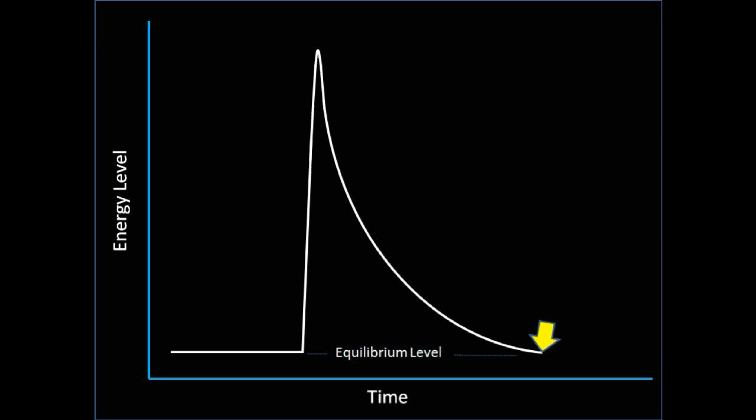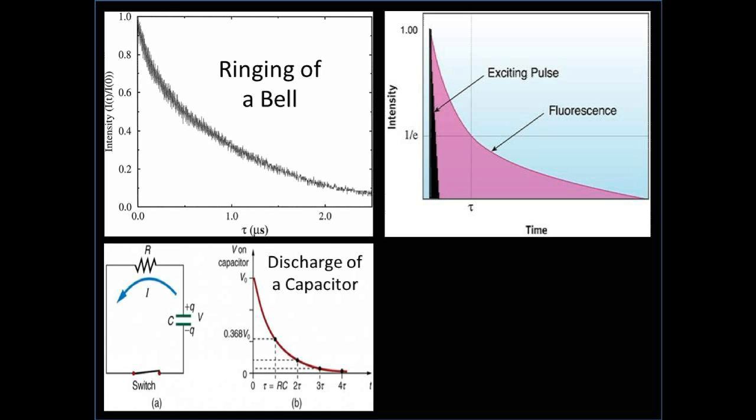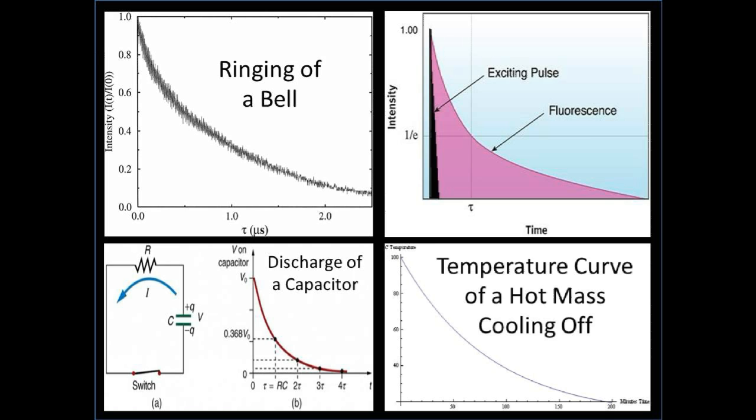There are many examples of this curve in nature. For example, the exponential decay of a bell after it has been struck, the exponential decay of fluorescence as the excited gas molecules move back to their original equilibrium state, the discharge of a capacitor to its equilibrium state, and the cooling of a heated body like a hot cup of coffee as it moves to its equilibrium state, which is the room temperature.